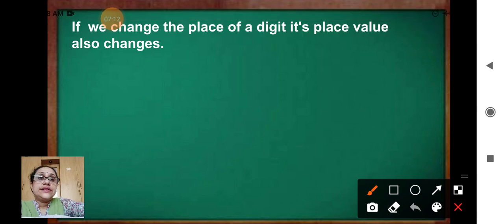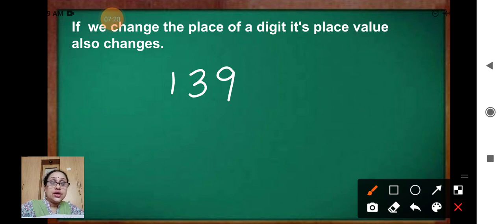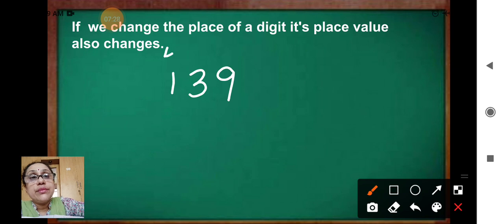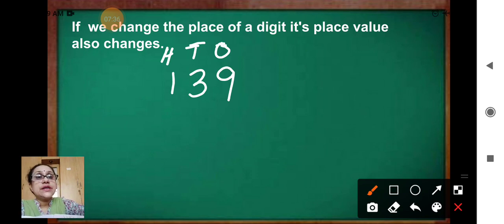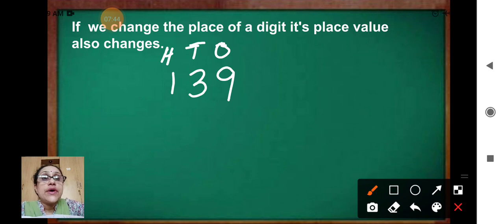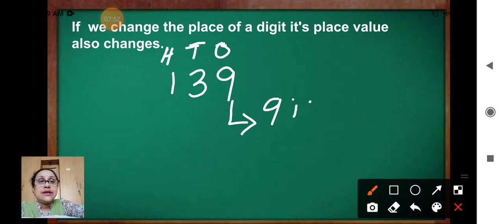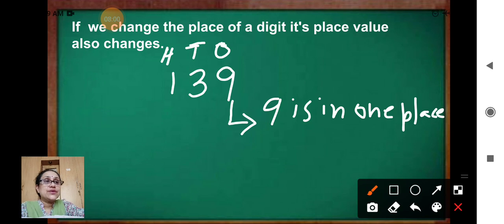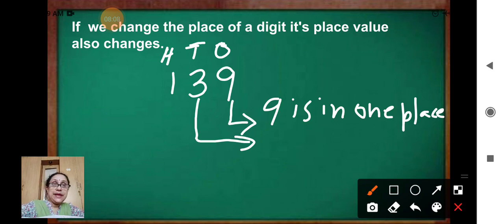Now let's see: here you can see 139. We have to find out which place the digit is — that is, remember H, T, O. To find out the place value of 9, find out which place 9 is in. 9 is in 1's place. 3 is in 10's place.